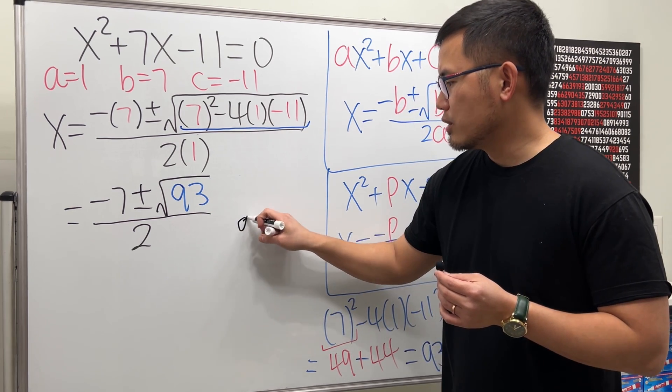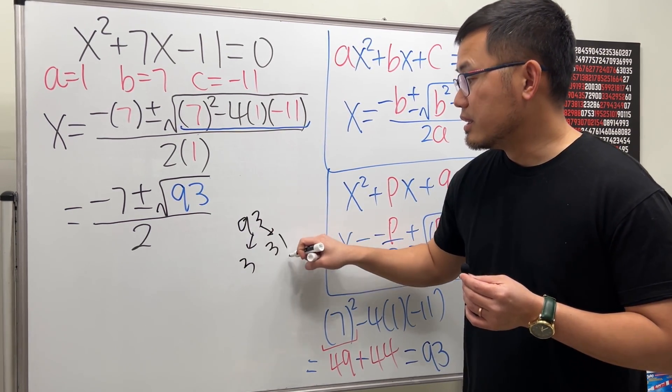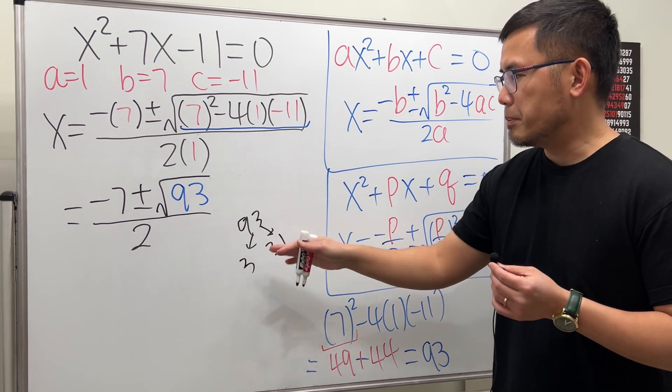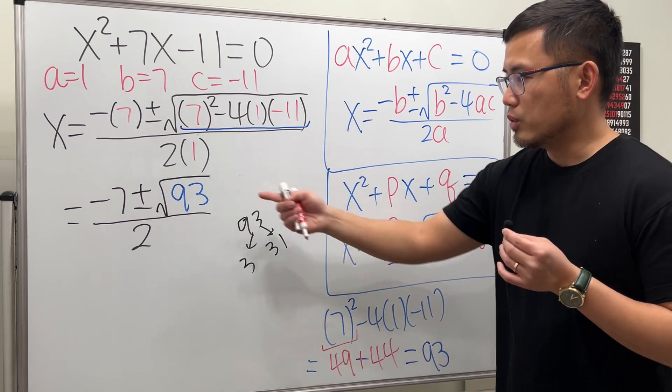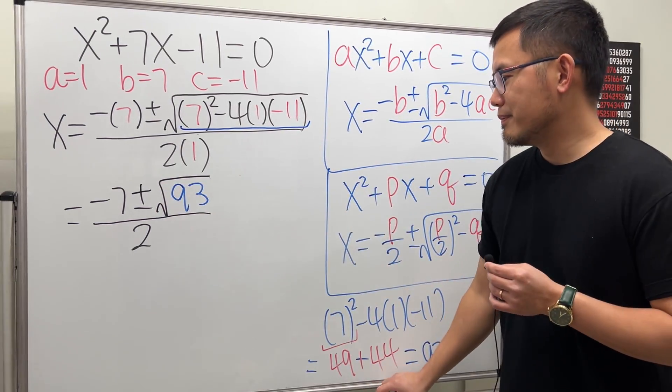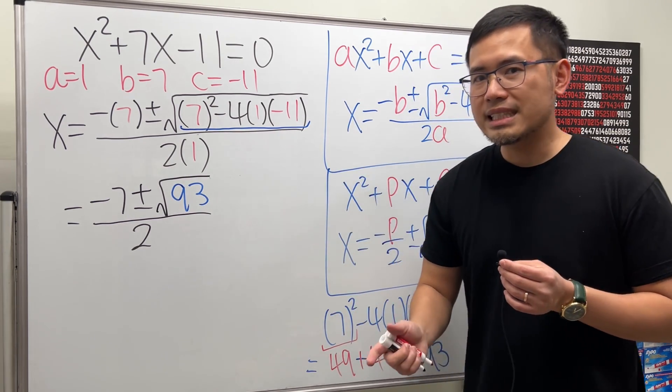Now if you look at the square root of 93, we cannot simplify it. 3 goes into 93, right? You can just kind of break it down. This is just 3 times 31, so it goes into 93: 31. And that's it. We don't get any perfect square or anything, so you just leave it like that. Usually though, you will just leave this as your answer, but since the equation is asking us for the answer as decimals, then just take our calculator and do the following.